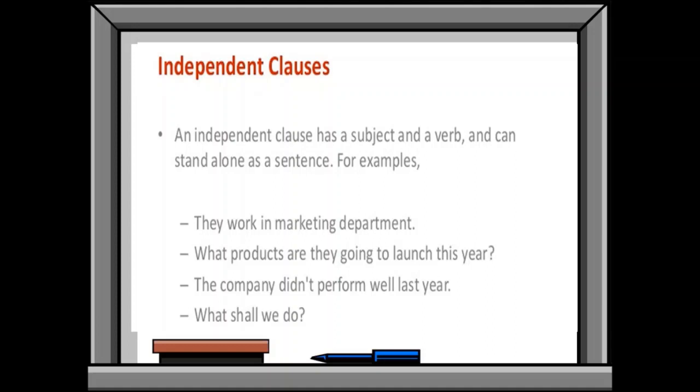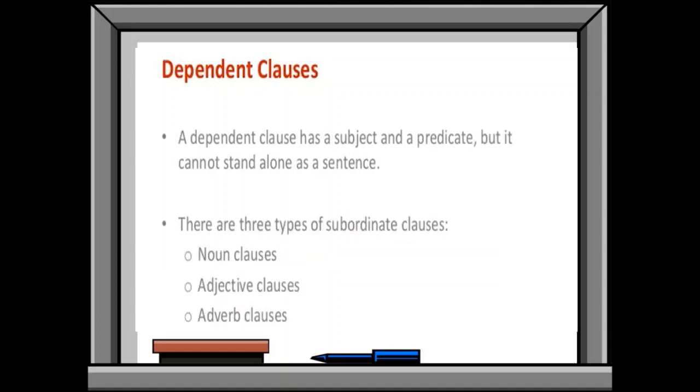For example, they work in marketing department. This is the complete sentence, so it is the independent clause. What shall we do? It is also an independent clause. Dependent clause has a subject and a predicate, but it cannot stand alone as a sentence.